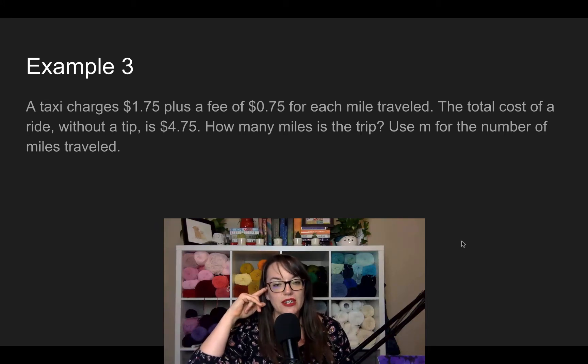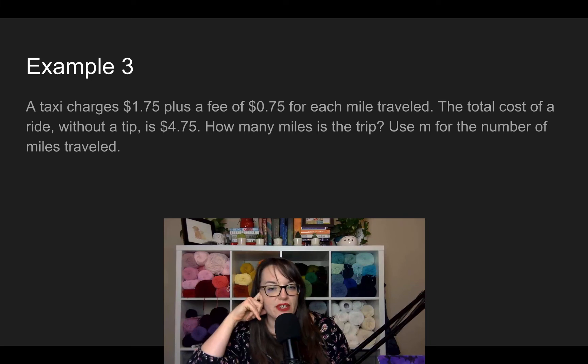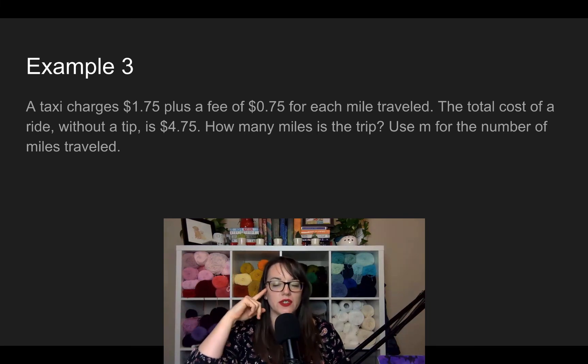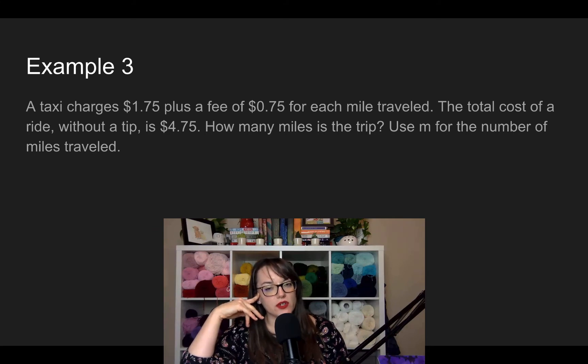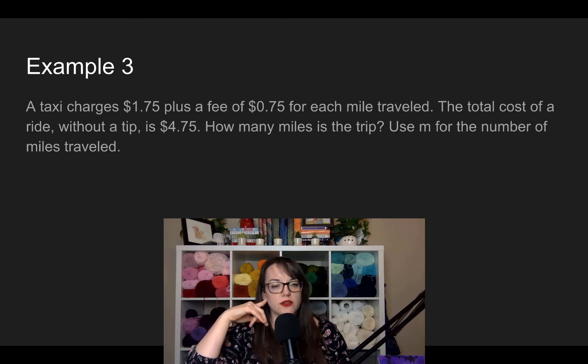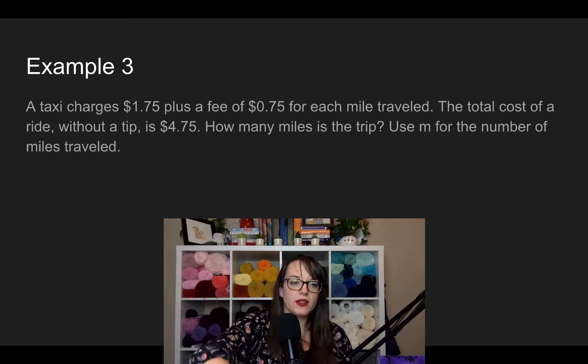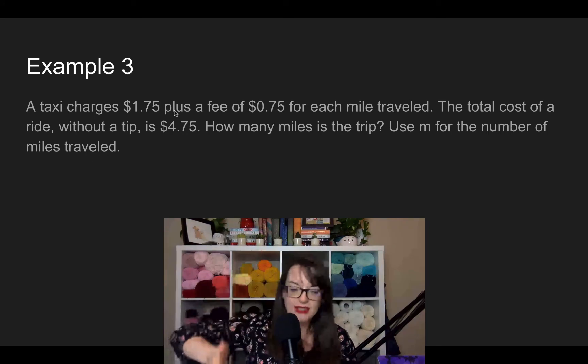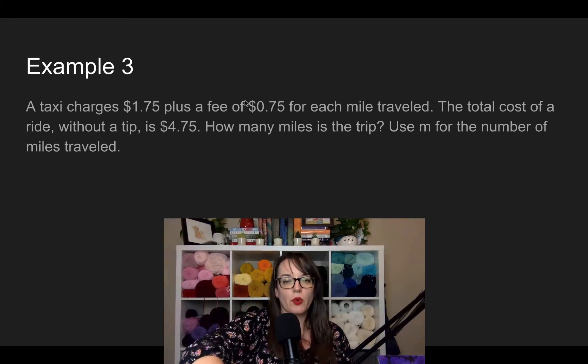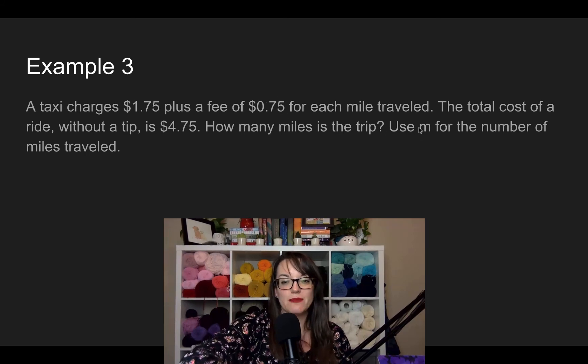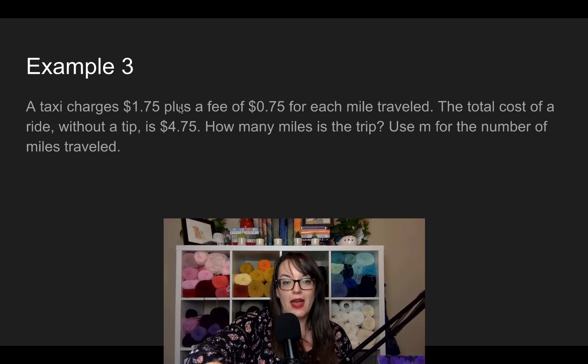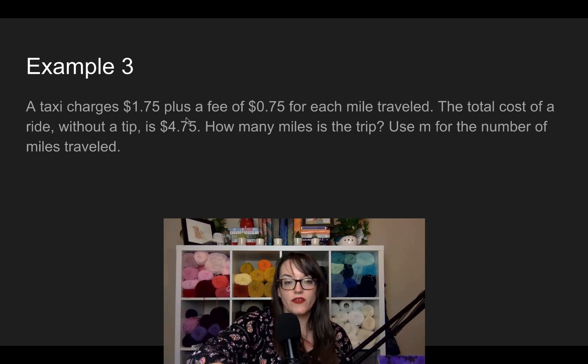Last one. A taxi charges $1.75 plus a fee of 75 cents for each mile traveled. The total cost of a ride without a tip, so just don't ignore that part, is $4.75. How many miles is the trip? Use M for the number of miles traveled. What does this equation look like? All right. So we know that the taxi charges this much. Like, you get in the taxi, it's $1.75. And then every mile you drive is $0.75. So $0.75 times, because here's that each, $0.75 times M. So $1.75 plus or added to $0.75 times M. And here's your total cost equals $4.75.